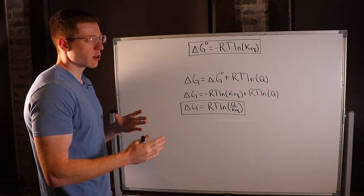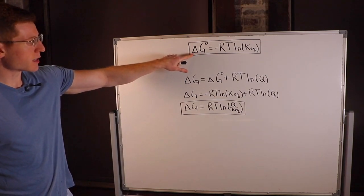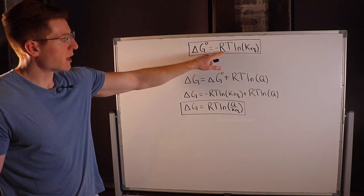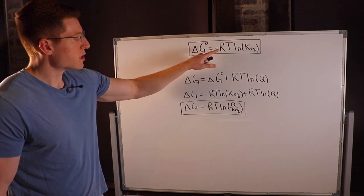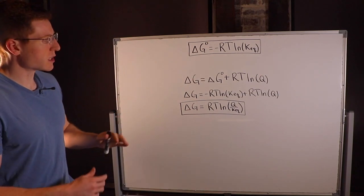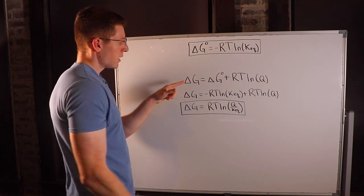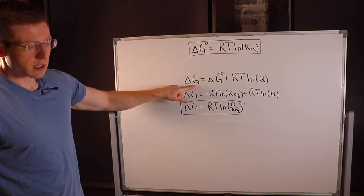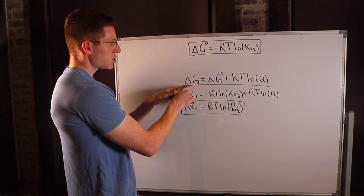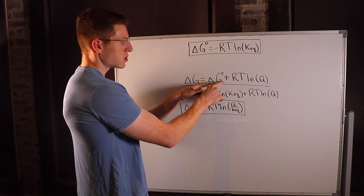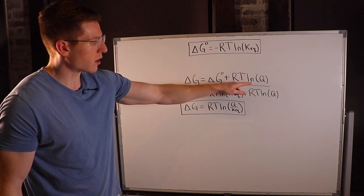Some practical application equations: the standard state delta G° equals negative R times T times the natural logarithm of the equilibrium constant K — that's delta G° = -RT ln(K). This lets you convert between the equilibrium constant and delta G°. Additionally, the flexible delta G equals delta G° plus RT ln(Q), where R is the gas constant and T is temperature in Kelvin.